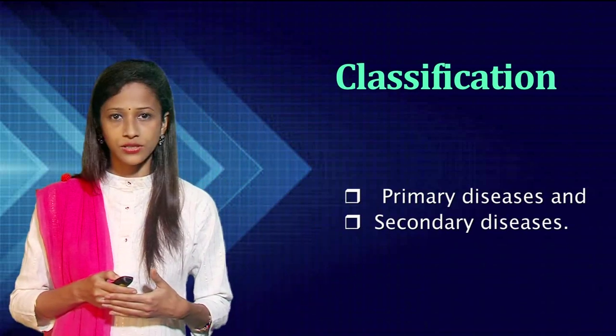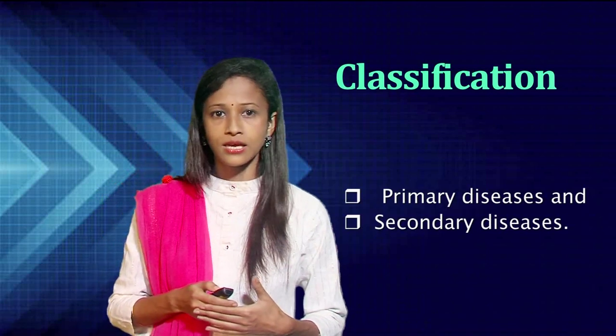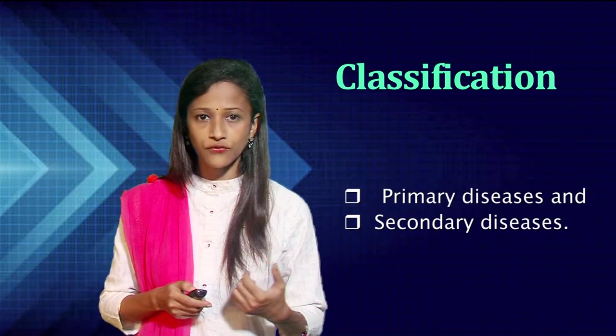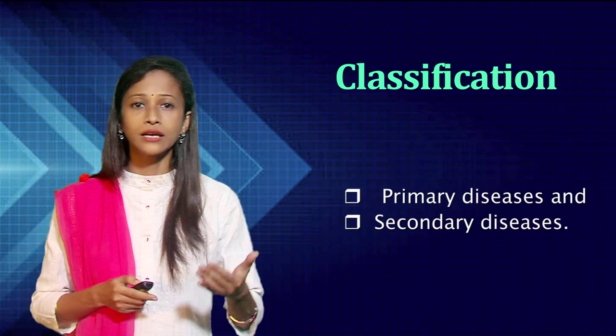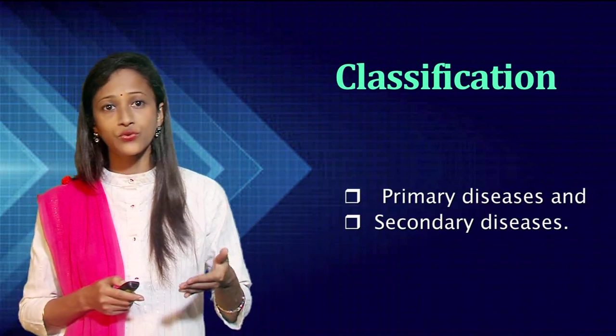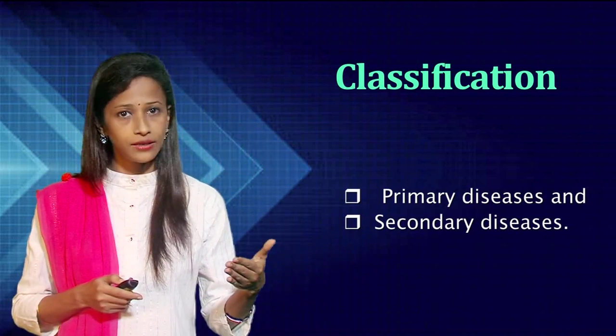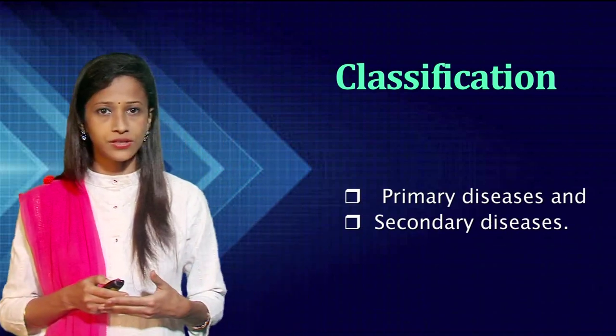Now, let's discuss tea diseases and their classifications. The diseases which commonly occur in tea can be classified into two broad categories: primary disease and secondary disease. Primary diseases are those which can cause death of healthy tissues or bushes even under the best growing conditions. Secondary diseases are those which attack the bushes only after the health of the plant is impaired due to cultural or environmental stresses. The primary and secondary diseases can be further categorized into different groups on the basis of the site of major infestation on the tea bushes — as root disease, stem disease, and leaf disease.